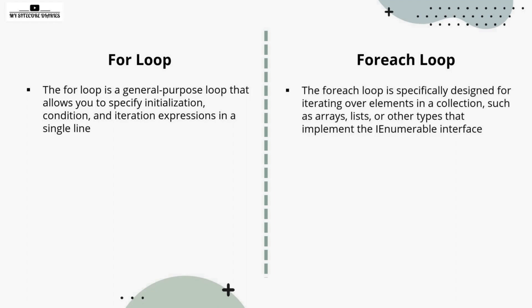Whereas the foreach loop is specially designed for iterating over elements. As mentioned previously, it will iterate each item from the collection — it is designed for that. It is used with collections such as arrays, lists, and other types that implement an IEnumerable interface. It is basically for a collection of items, whereas the for loop is general purpose and can be used for anything.